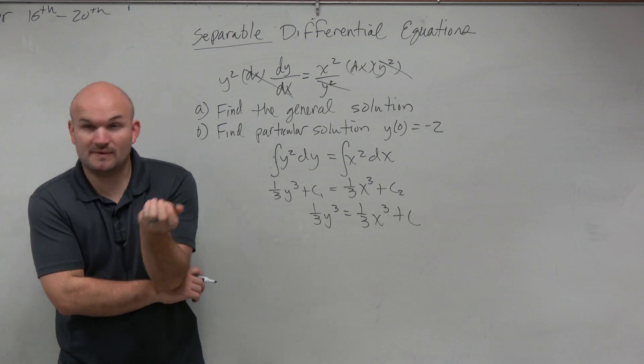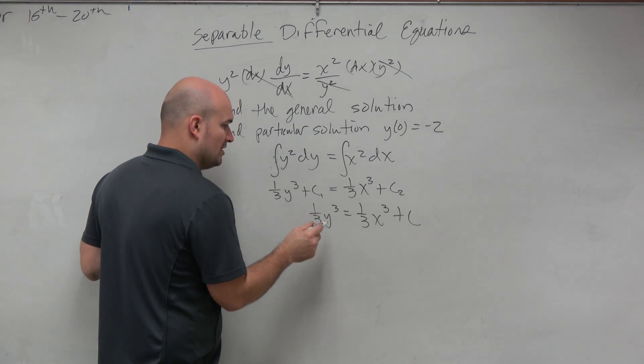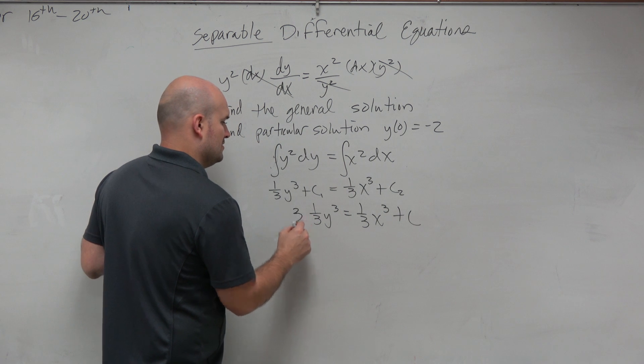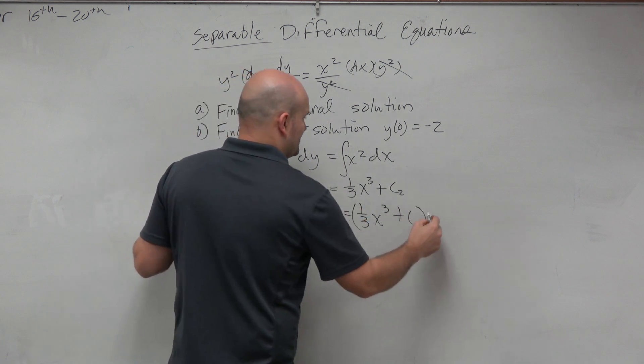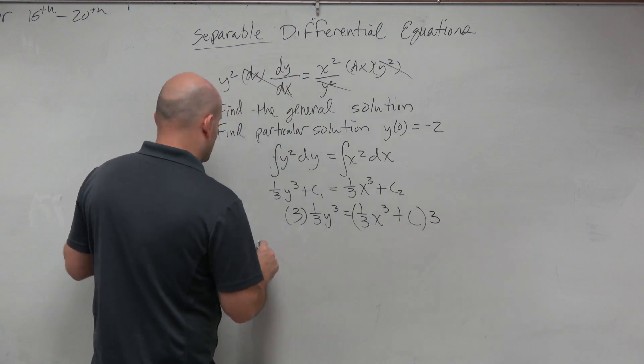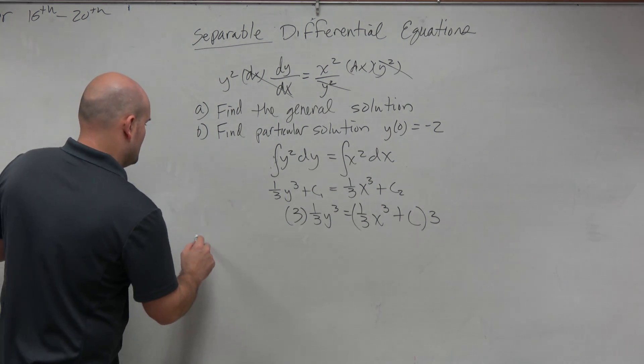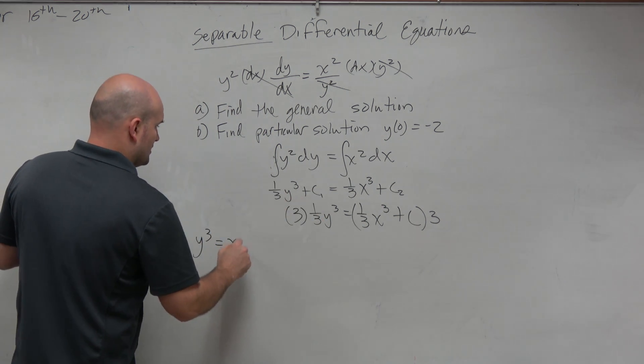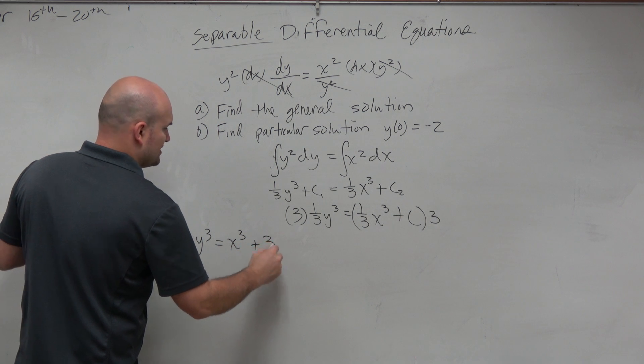I need to undo the 1/3, which would be multiplying by 3. So I multiply by 3 on both sides. So therefore, I get y cubed equals x cubed plus 3c.